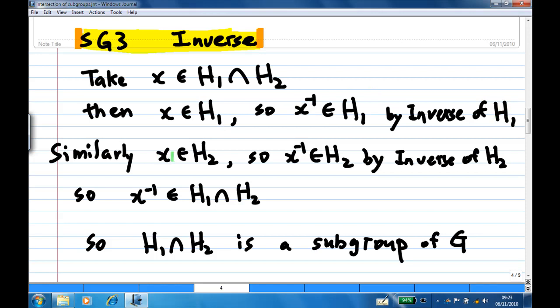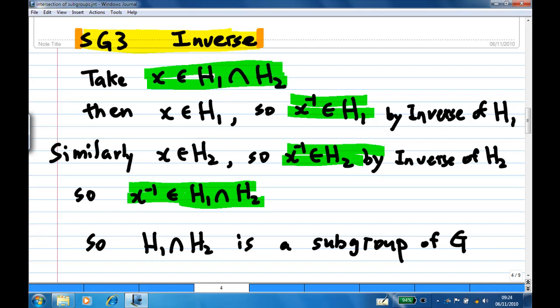Similarly, x belongs to H2. So x inverse belongs to H2 by the inverse property of H2. So combining these two together, we know x inverse belongs to the intersection of H1 and H2. Every element in H1 intersect H2 has an inverse.